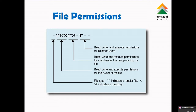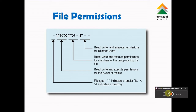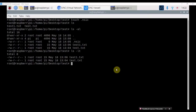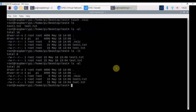So file permissions will have 10 digits. The first digit denotes whether it is a regular file or directory. The next 3 digits give details about the permissions of the owner of that file. The next 3 digits give details about the permissions for members of the group owning the file. The last 3 digits give details about the permissions for all other users. I am going to give the command ls -al, which will list the files in the directory with file permissions. The first 10 digits of each line give the file permissions.